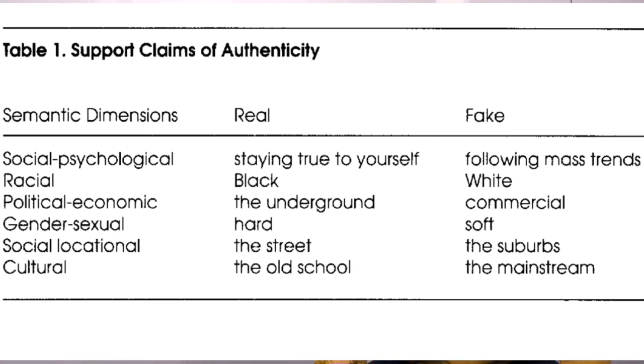Social locational dimension has to do with what's real, the street, what is fake, the suburbs. They're coming for the suburbs. They're coming for your suburbs. I'm just kidding. That's the craziest shit I've ever heard. Anyways, but yeah, the suburbs are fake. Right. And that has to do a little bit with the racial element. Right. Like who lives in the suburbs, white people.